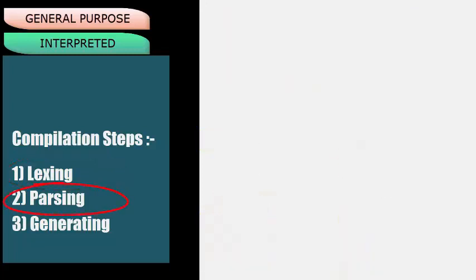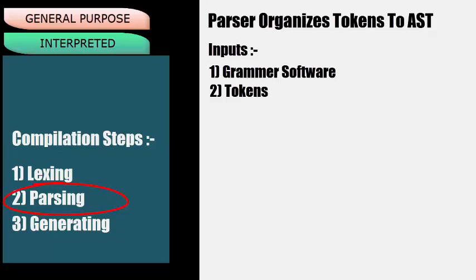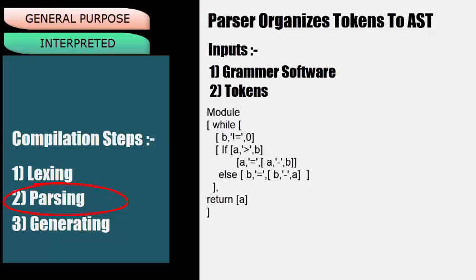Parsing is the next process. The Parser organizes tokens into an AST, or Abstract Syntax Tree. It takes two inputs: first, grammar software, and second, the tokens created by the Lexer. With the help of grammar, it validates each token and then arranges them in a syntax tree. For example, given these tokens, the parser arranges them into an AST.